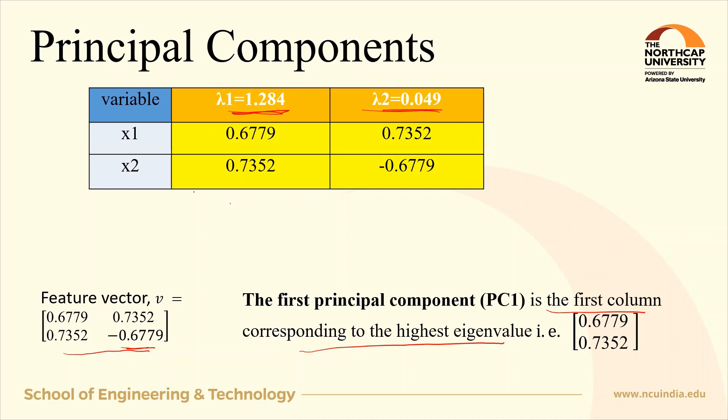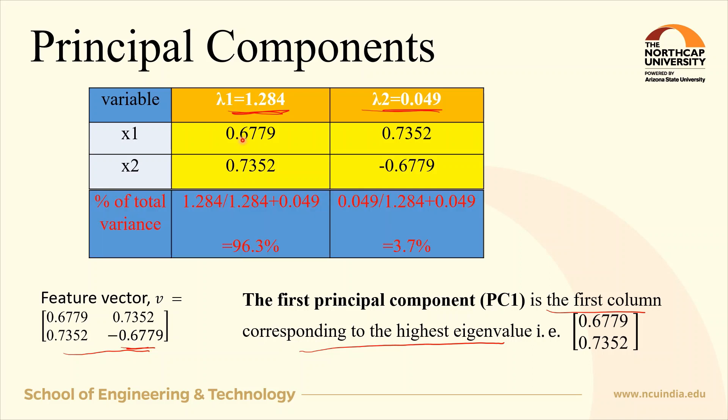This principal component tells us the direction of the new axis along which there is maximum variation of data. This maximum variation or information can be interpreted from the amount of total variance carried by the eigenvalues. As you can see, 1.284 divided by the total sum of eigenvalues equals 96.3%, and for the second eigenvalue it is just 3.7%. The first principal component carries the maximum variation: 96.3%.